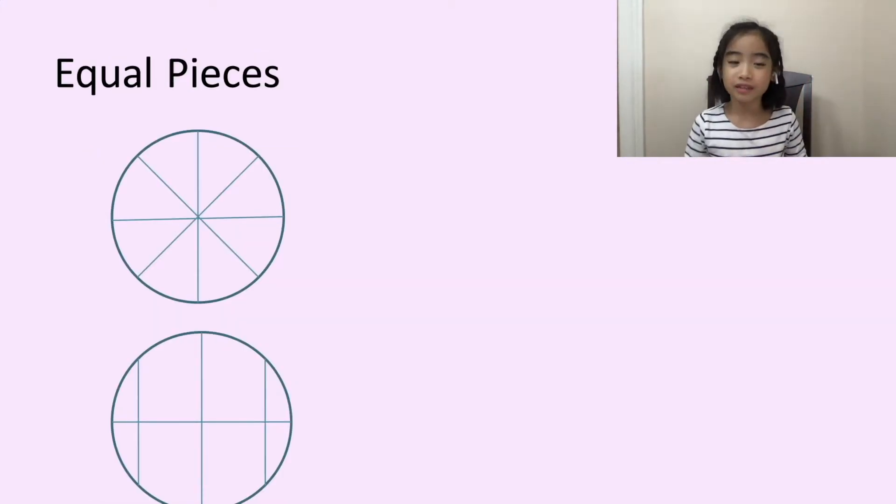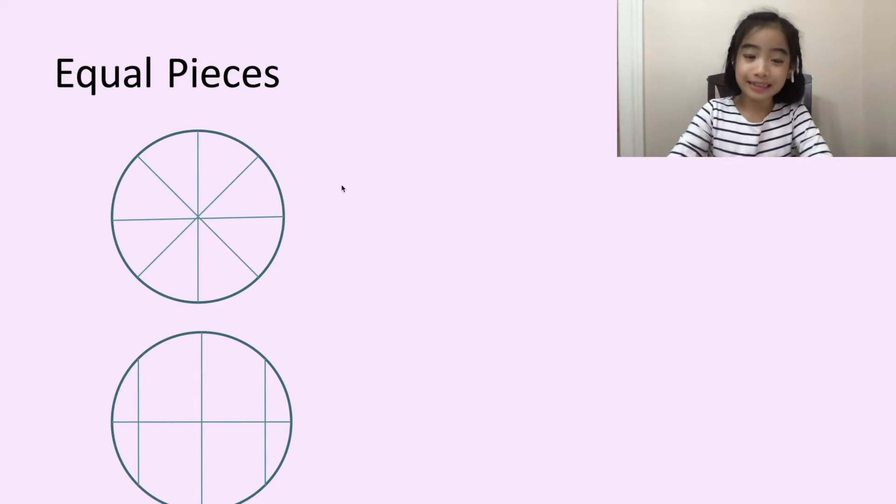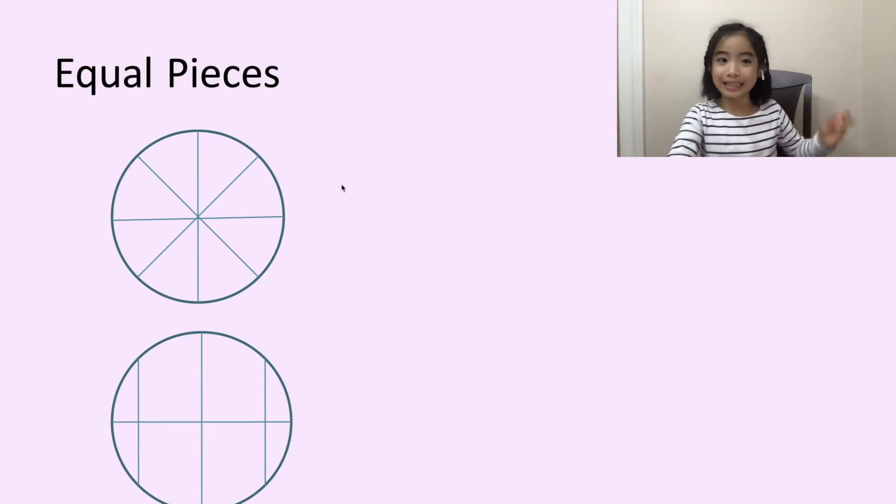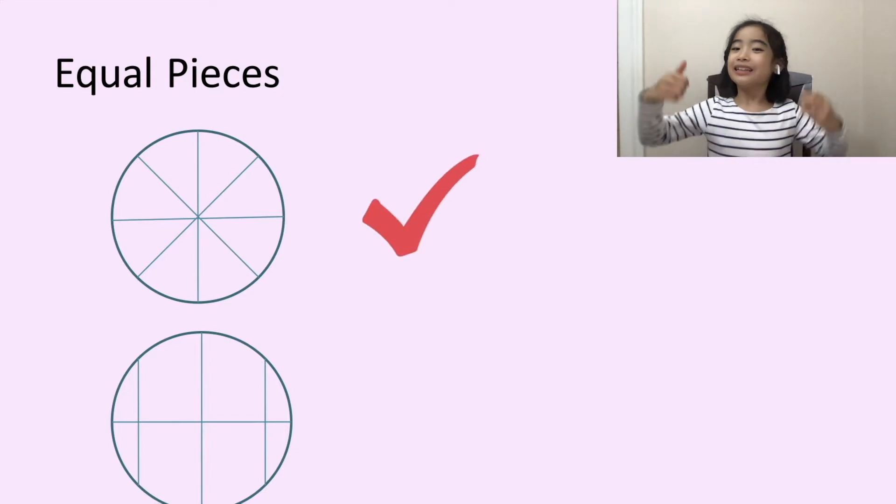Now, let's look at a few more examples. Here are two circles. They are all divided into eight pieces. Which one is divided into eight equal pieces? First, let's look at the first circle. It looks like it has been divided into eight equal pieces. So, let's call this correct.